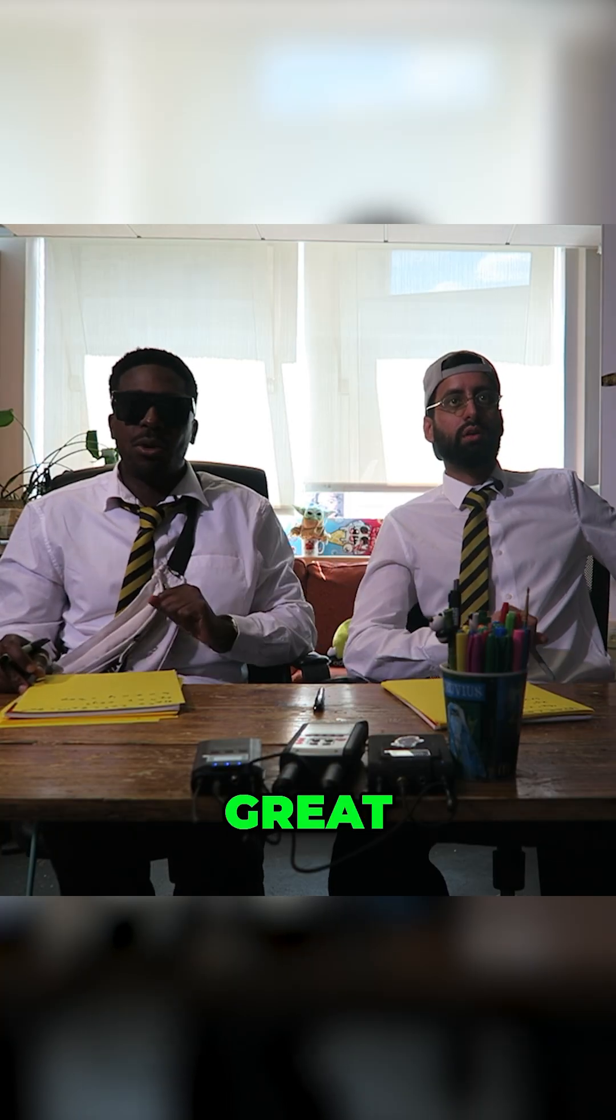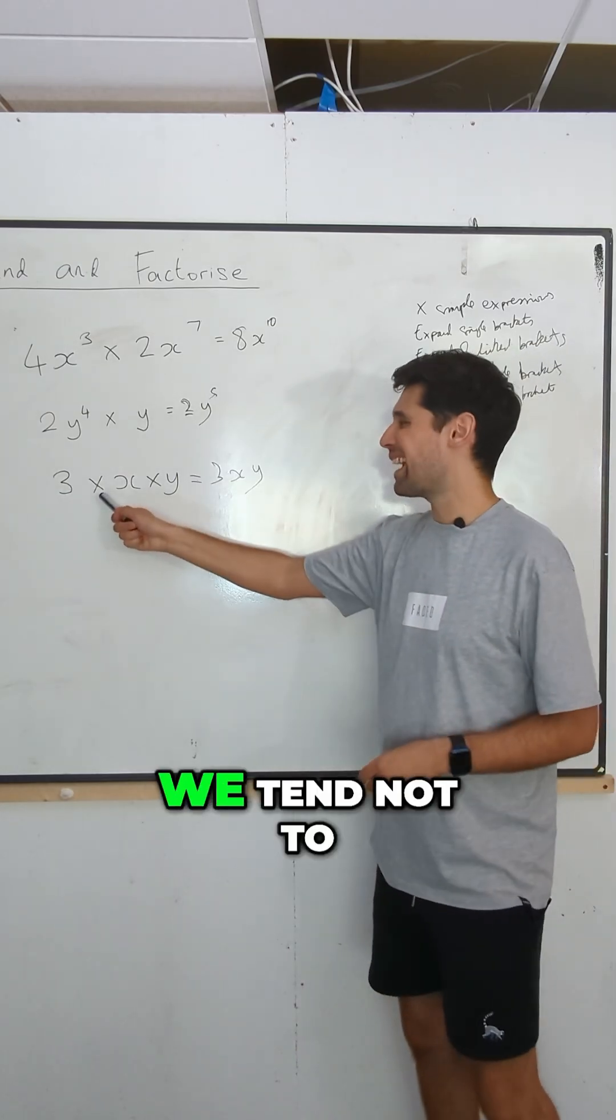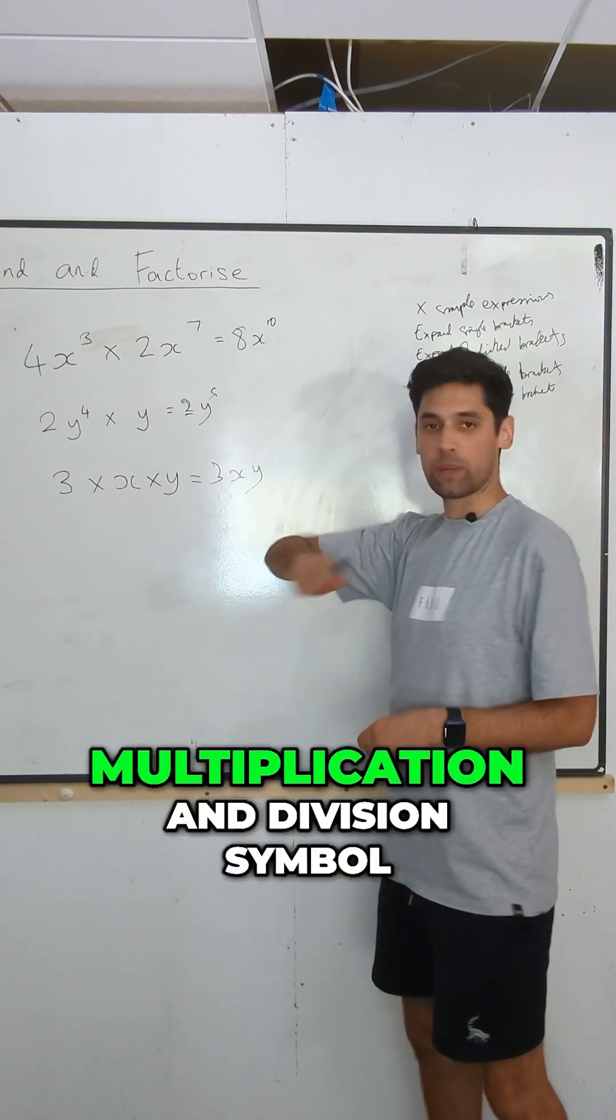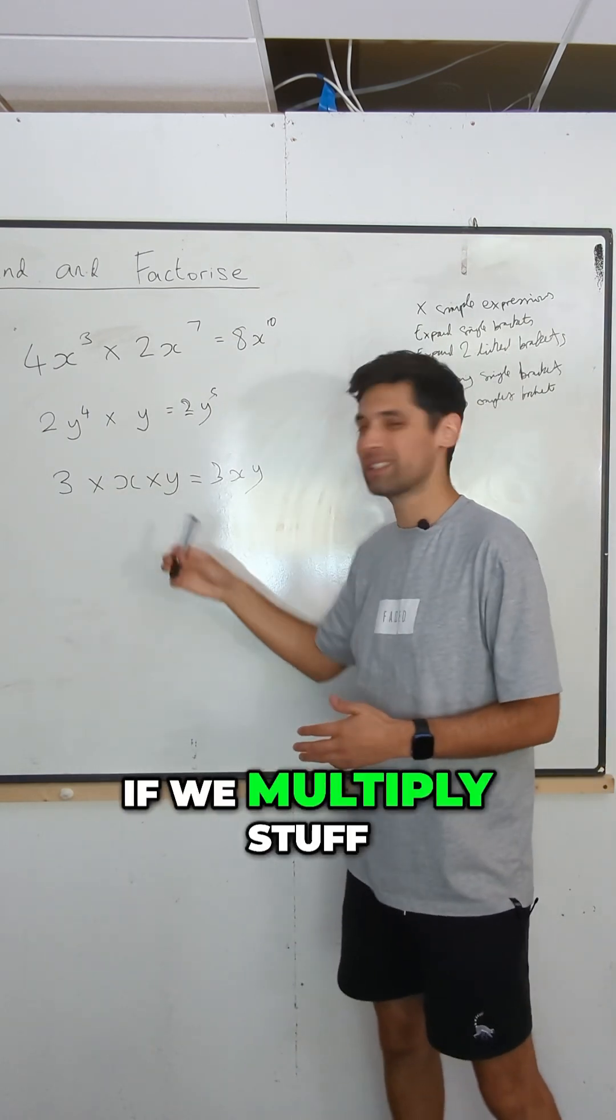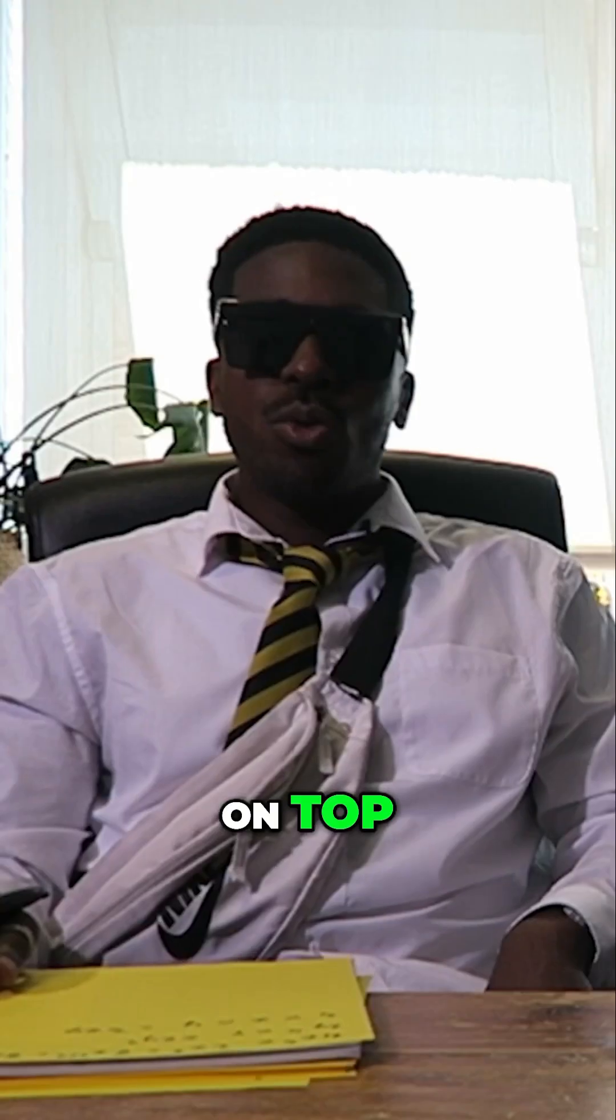I don't know what's going on with my handwriting there, but that's okay. So yeah, in our algebra, we tend not to, in our answers, we don't use the multiplication and division symbol. If we're multiplying stuff, we just shove that together. And if we're dividing stuff, we just put it on top.